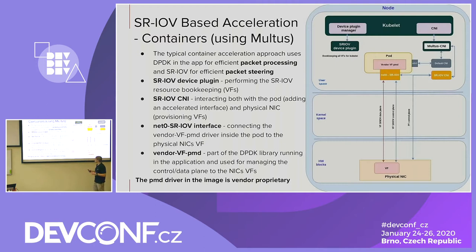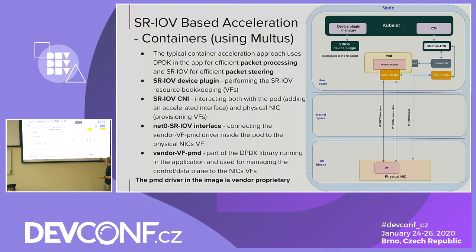For SR-IOV acceleration with containers, we use a layered diagram: hardware, kernel space, and user space. In Kubernetes we talk about a node with those three layers. Packet processing is done by DPDK — you'll typically see a container with a DPDK library linked into the application for efficient packet processing. Packet steering is done by SR-IOV. It's built on Multus, a CNI that enables you to associate multiple CNIs to a given pod, injecting multiple interfaces into the same pod. This is a non-intrusive solution: your primary interface remains a regular Kubernetes interface, and you push a secondary accelerated interface connected to SR-IOV.